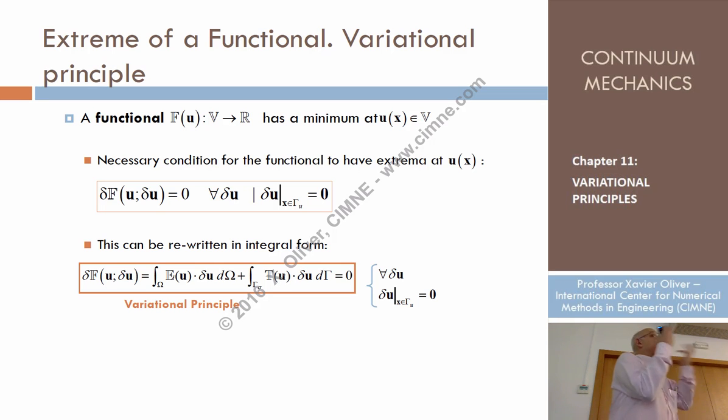So, we are going to use functionals and Gato derivative of the functionals to find extrema of functionals in what are called variational principles. Variational principle is just that the Gato derivative of a certain functional is equal to zero. That is a variational principle.